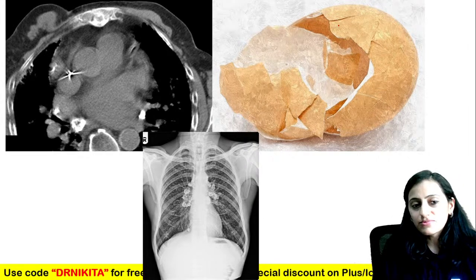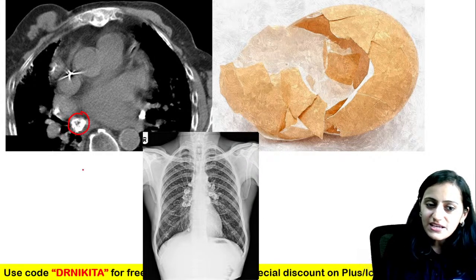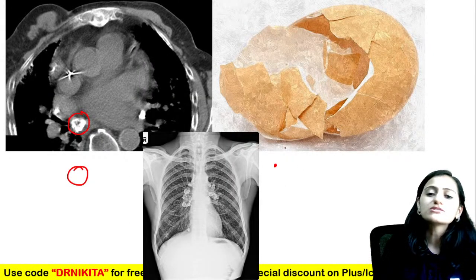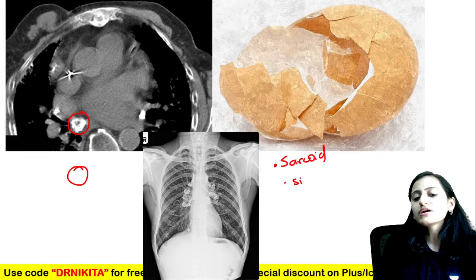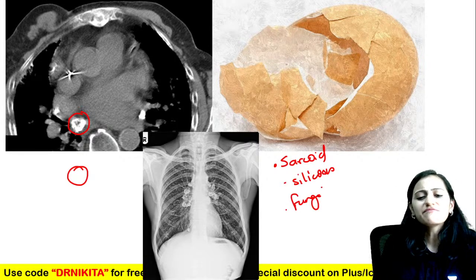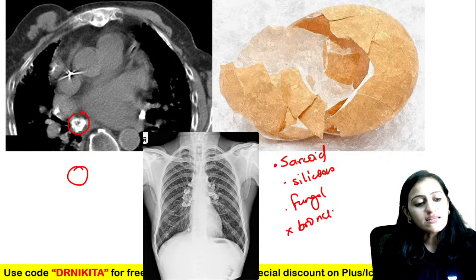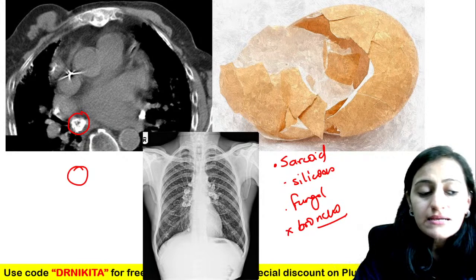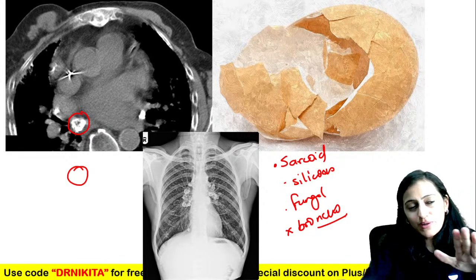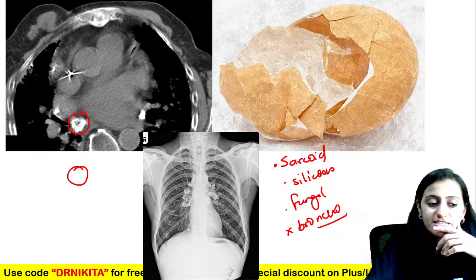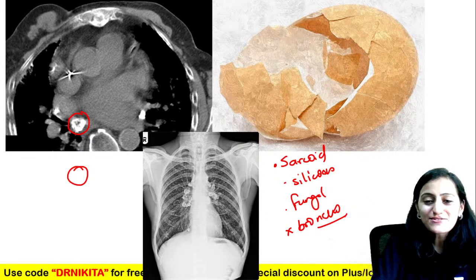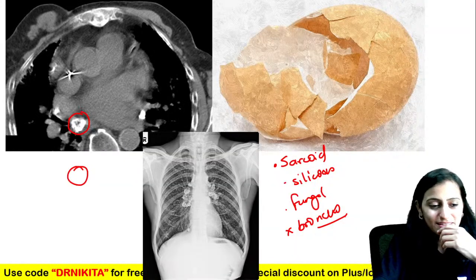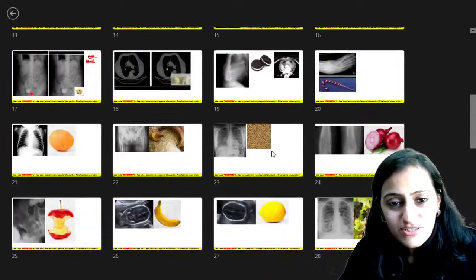Eggshell calcification — calcification only in the periphery. Multiple causes: sarcoidosis, silicosis, amyloidosis, fungal infections. It is not seen in bronchogenic carcinoma. Alveolar proteinosis gives crazy paving appearance — ground glass with septal thickening. That concludes the food signs.